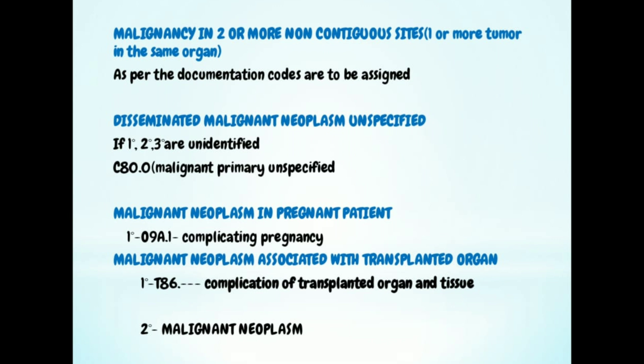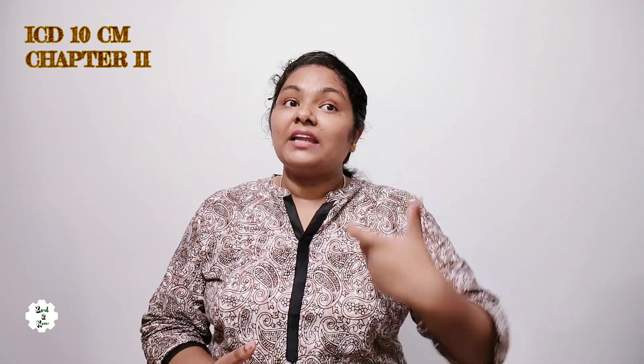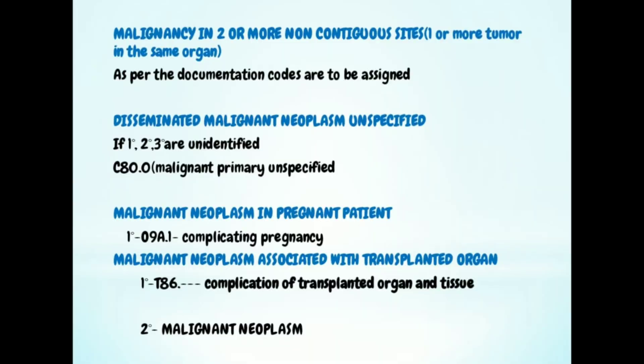The last topic: if a malignancy is associated with a transplanted organ, the primary will be a code from category T86 — complication of transplanted organ and tissue. From T86, that is the primary, and secondary will be the malignancy.